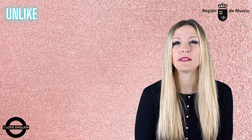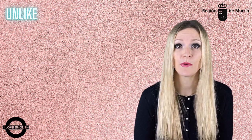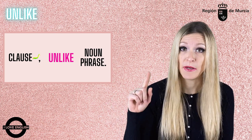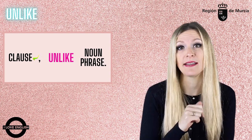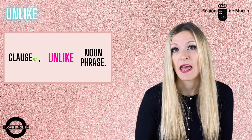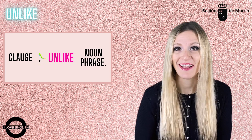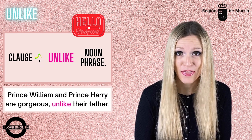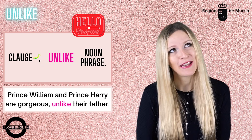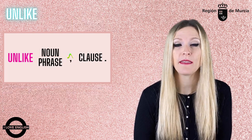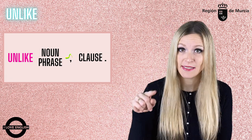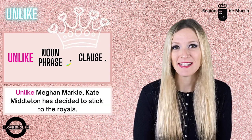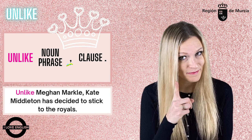Unlike is frequently used to show contrast between two things or two people. You'll see it in different structures — one of them being a clause followed by a comma, then unlike and a noun phrase — that is, a noun, a pronoun, or a determiner plus noun. For example: Prince William and Prince Harry are gorgeous, unlike their father, who's no oil painting. Unlike can also be used at the beginning of a sentence, followed by the noun phrase, then a comma and the second clause. Unlike Meghan Markle, Kate Middleton decided to stick to the royals.